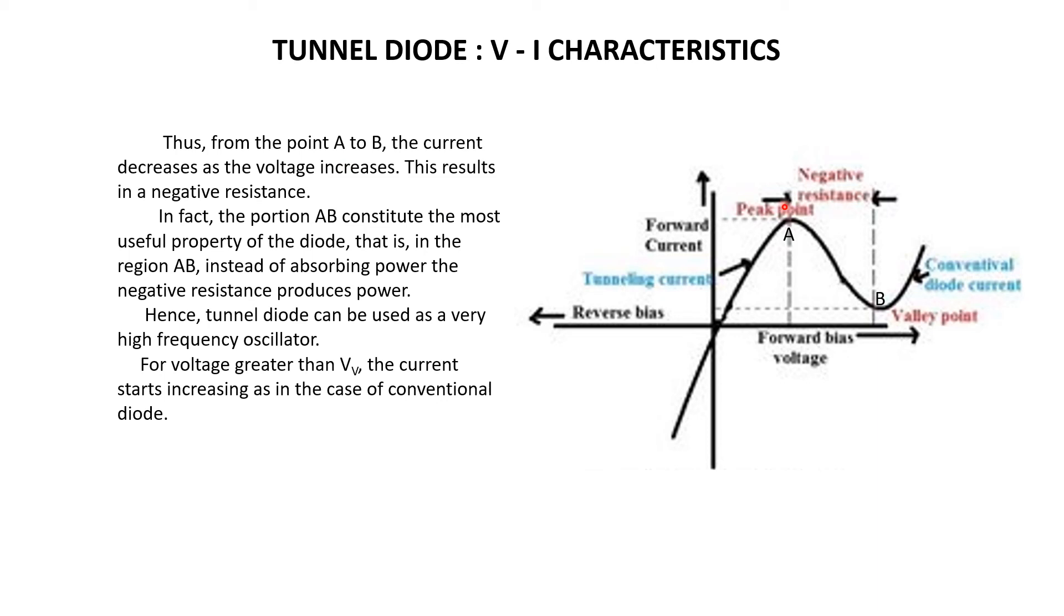From this graph, one can see that from point A to B, the current decreases as voltage increases. The voltage is increased in this manner, but the current decreases from point A. From Ohm's law, we know that as voltage increases, current increases.